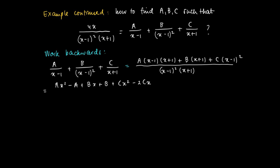And we have a plus b times x minus 2c times x, and we have a couple of constants, minus a plus b plus c, divided by (x-1)² times (x+1).